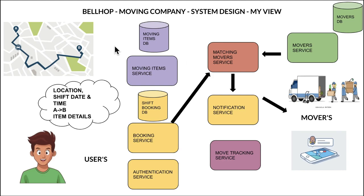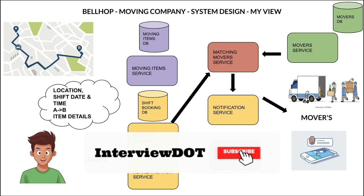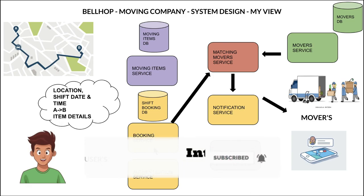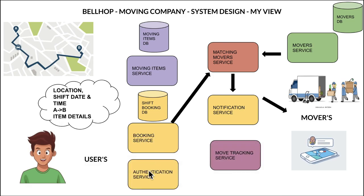Now I'm going to share my view on the system design for this Bellhop product. There are two user groups: users who want to shift from location A to B, and movers who help users with shifting. Users log into the product using an authentication service and provide payment details. The user also provides location details, ship date and time, source and destination locations, and item details — all of which are captured and stored in the database.